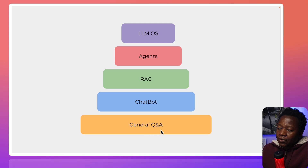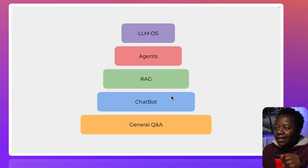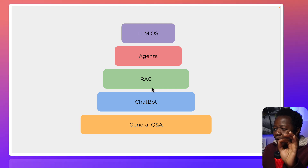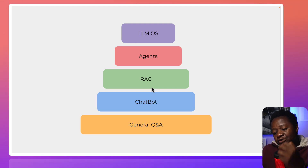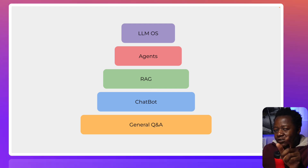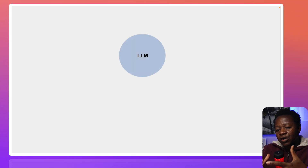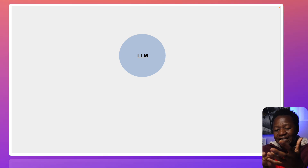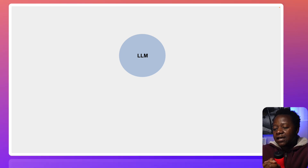So we looked at General Q&A and the Chatbot. Next we go to the RAG section. RAG stands for Retrieval Augmented Generation. Large language models were trained on massive amounts of data — textual data, audio, and many different kinds — so they have a very solid knowledge base of the world.